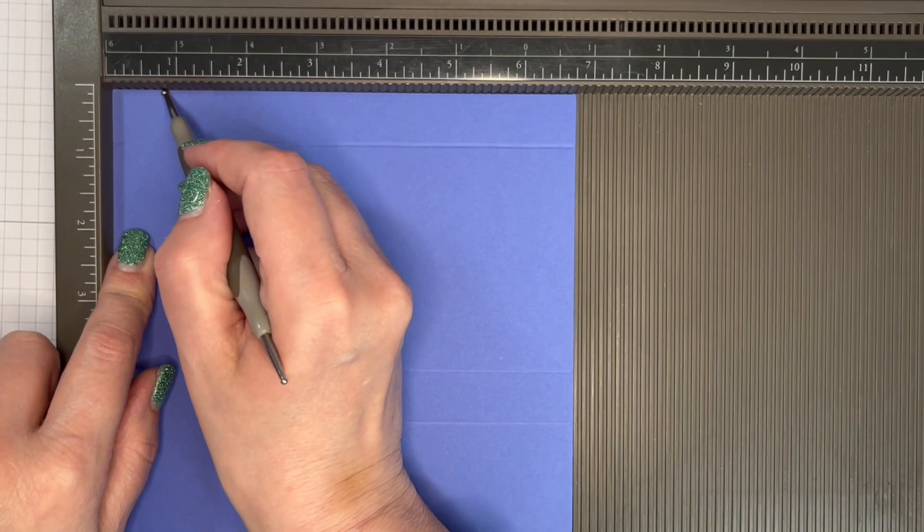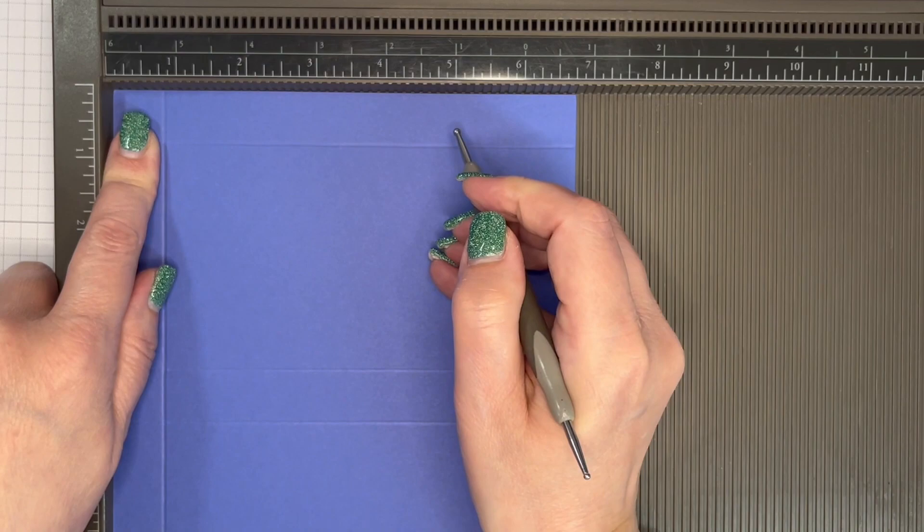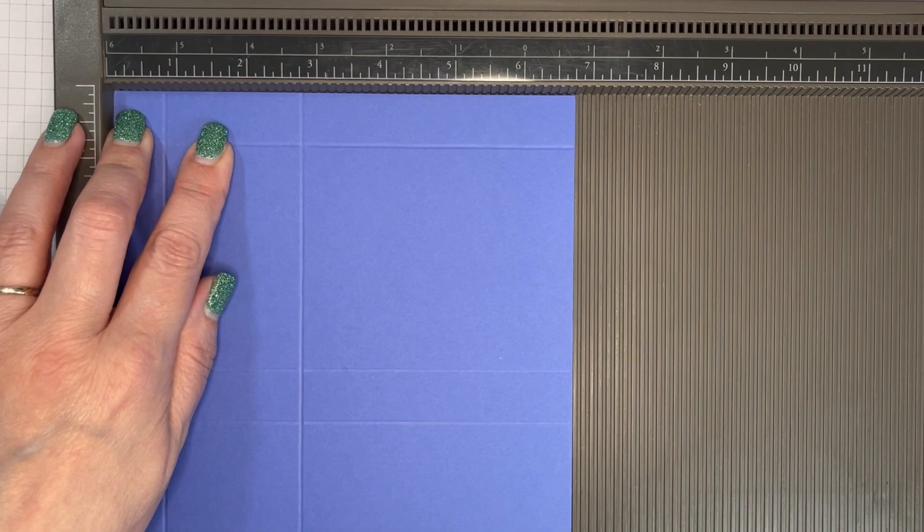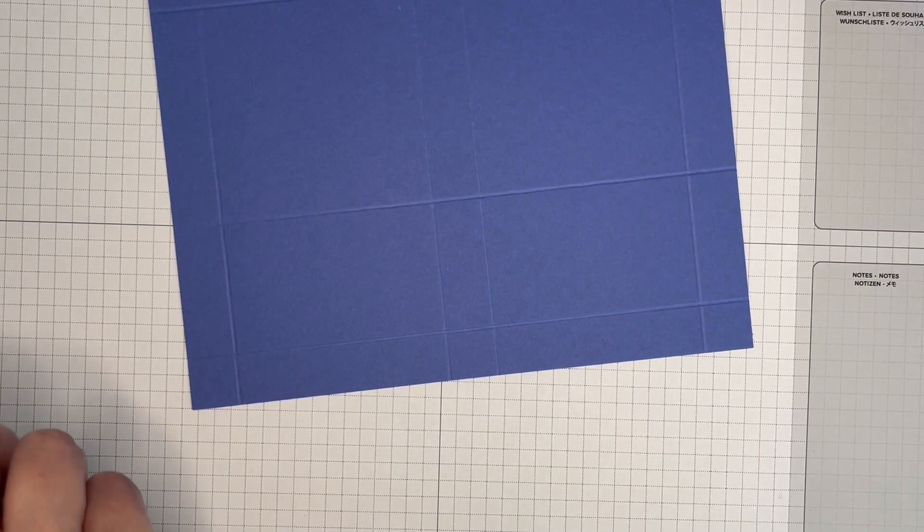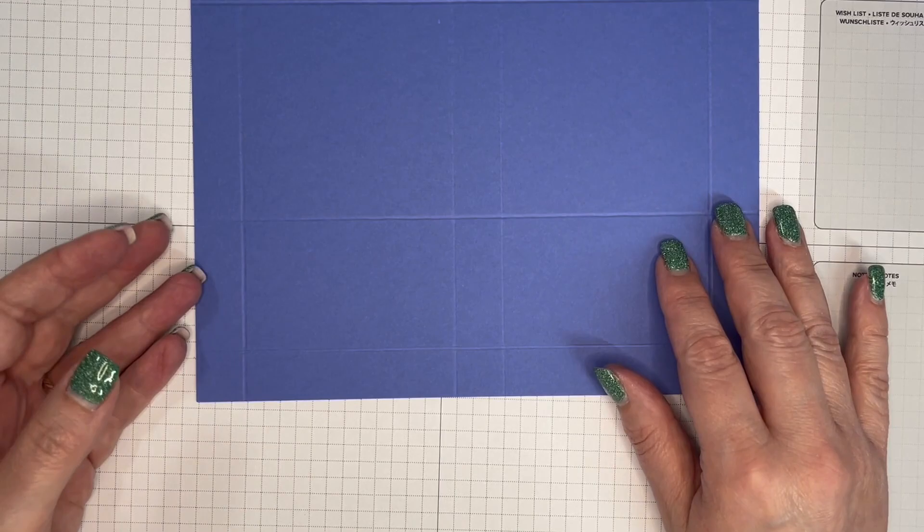Turn that around and on the short side, score that at three-quarters of an inch, then at two and three-quarters, and then at six inches. We actually need to do a little bit of extra cutting, and I'm going to bring a paper trimmer in for that.